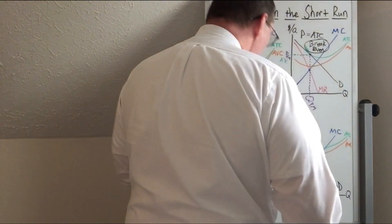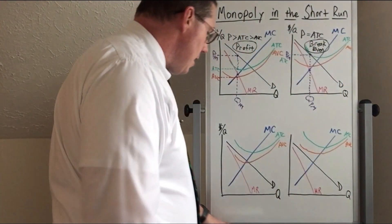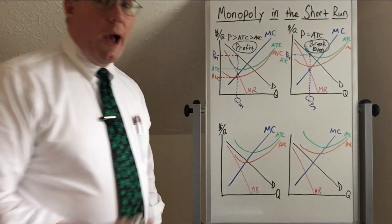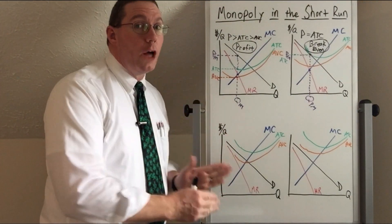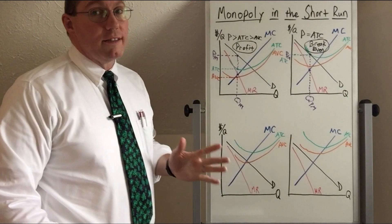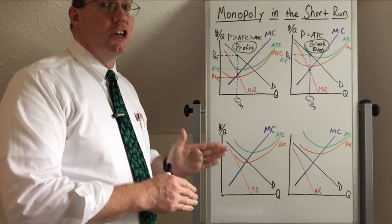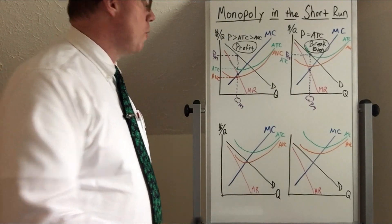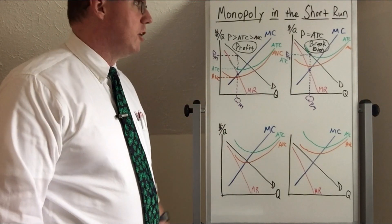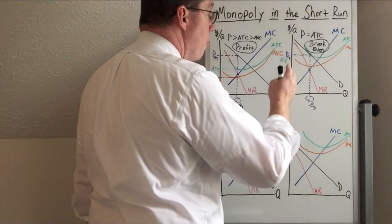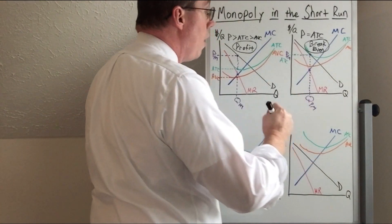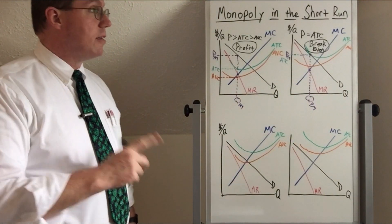You might be thinking: why is a monopoly breaking even if they can set their own price? It just so happens that because of their cost structure, their best price and best quantity result in zero economic profit. They're going to keep operating with zero economic profit because that's the best they can do. If they increase their price they'll have a loss; if they lower their price and increase quantity, they'll also have a loss. The best they can do is break even.